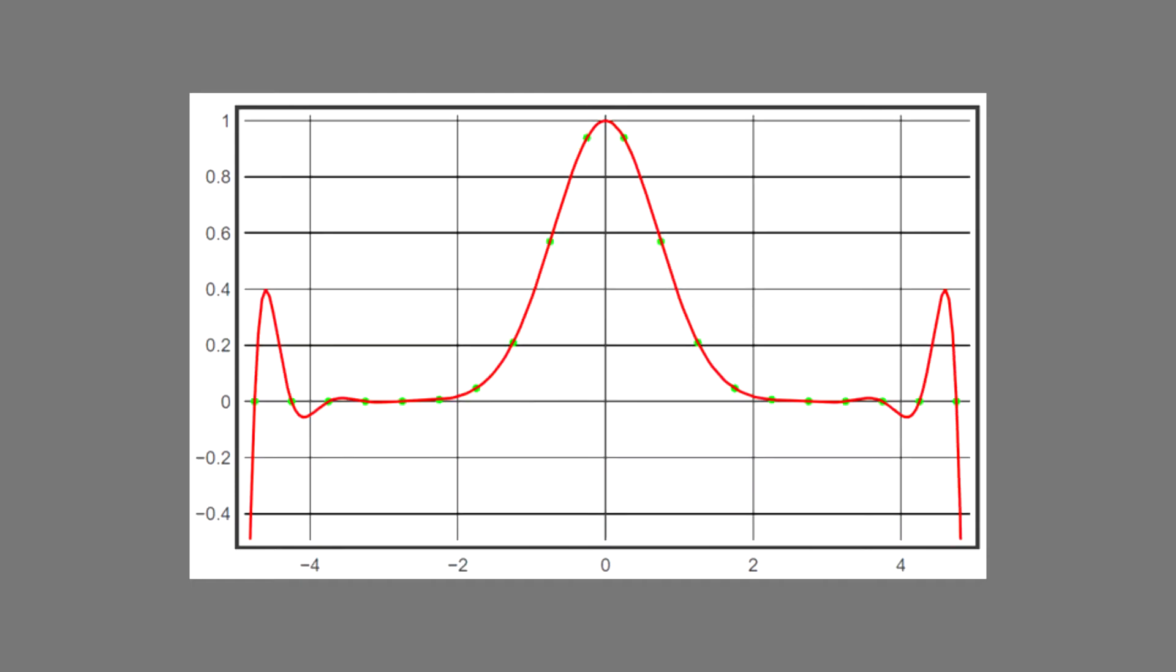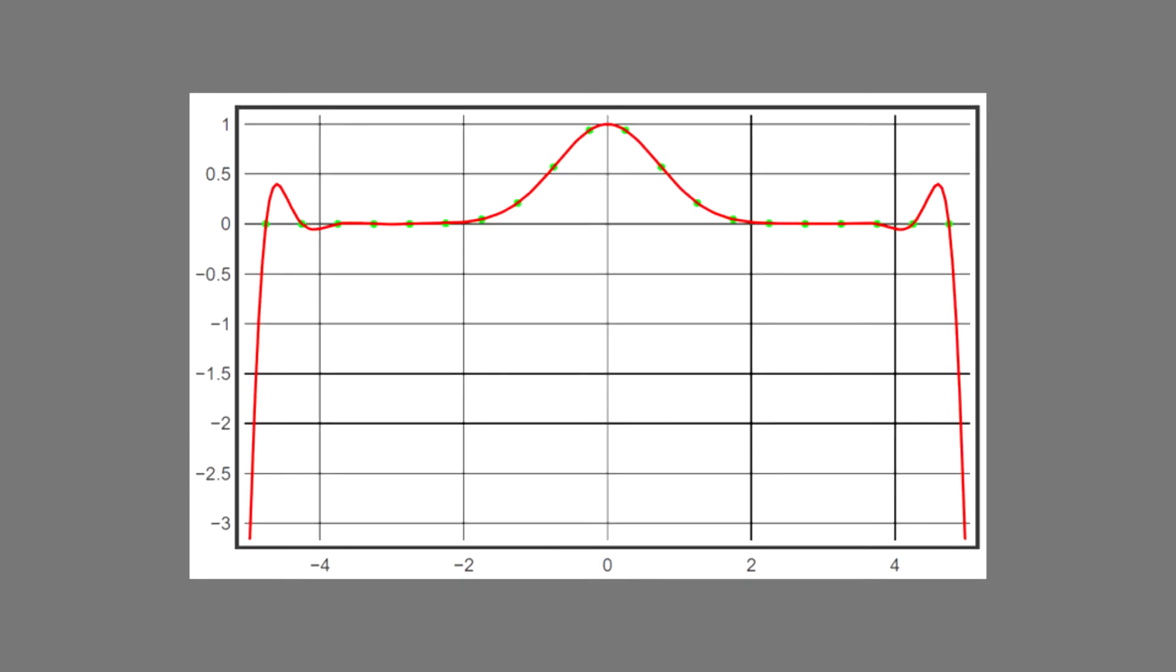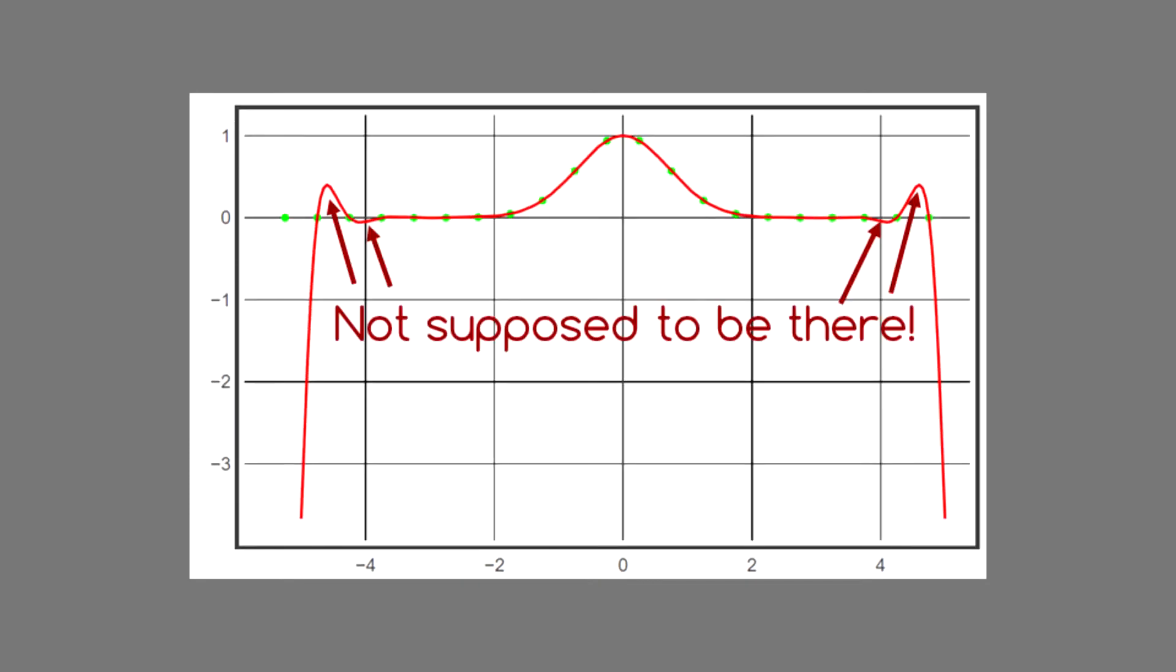But if we zoom out and look at the endpoints of our data range, we see some problems. There aren't supposed to be maxes and mins out here, and the endpoints of our polynomial are an outright disaster. What's going on here?